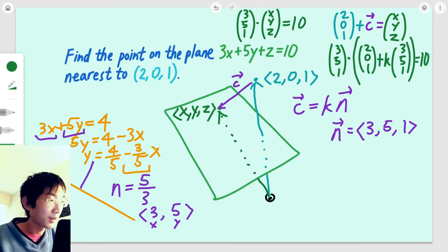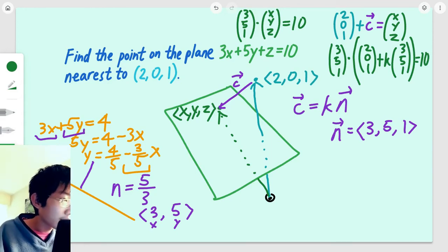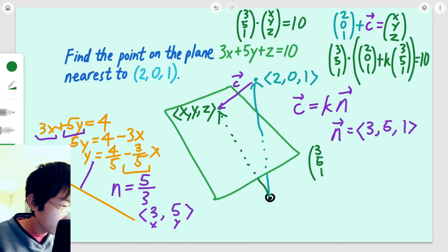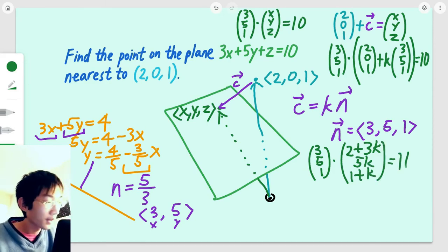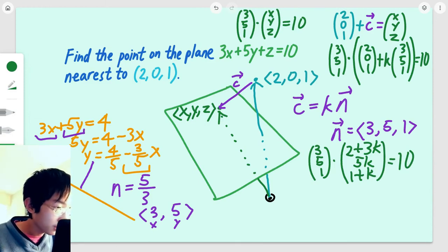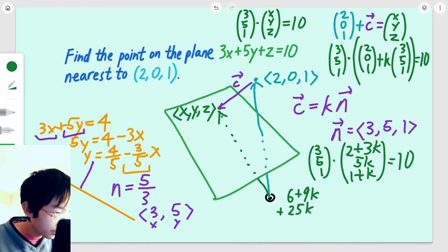We can expand things even further to get (3, 5, 1) dot (2 plus 3k, 5k, 1 plus k) equals 10. We can do the dot product to get 6 plus 9k plus 25k plus 1 plus k. So, all of that is going to equal 10.